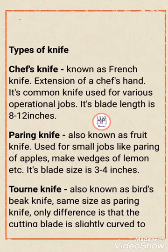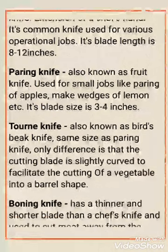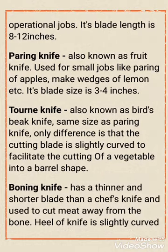Next one is the paring knife. The paring knife is also known as the fruit knife and is used for small jobs like paring apples, making wedges of lemon, etc. Its size is 3 to 4 inches and it is used for small, detailed tasks.